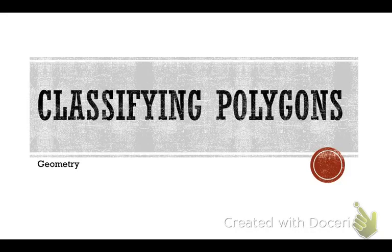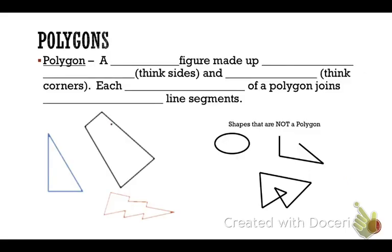This unit is all about polygons. We're going to learn about generic stuff about polygons and then go into specific polygons. First, let's talk about what a polygon really is. It is a closed figure made up of line segments, and I want you to think of those as sides and vertices — think of corners.